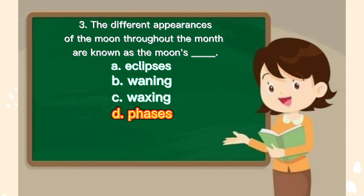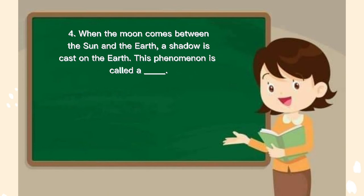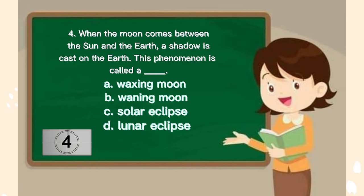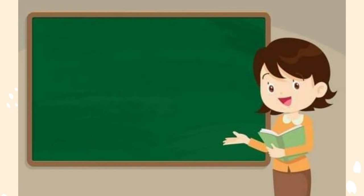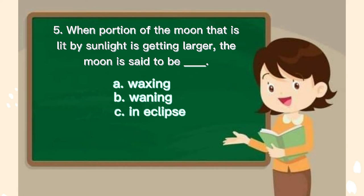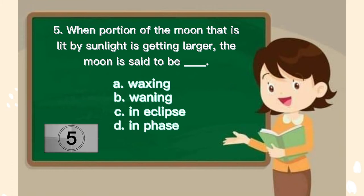Number 4. When the moon comes between the sun and the earth, a shadow is cast on the earth. This phenomenon is called a blank. A. Waxing moon, B. Waning moon, C. Solar Eclipse, D. Lunar Eclipse. The correct answer is C. Number 5. When the portion of the moon that is lit by sunlight is getting larger, the moon is said to be blank. A. Waxing, B. Waning, C. In eclipse, D. In phase. The answer is A.